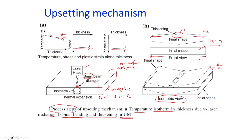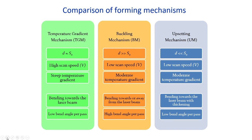Now let us compare the various forming mechanisms: TGM (temperature gradient mechanism), buckling mechanism, and upsetting mechanism. Looking at the relationship between laser spot diameter and workpiece thickness: in TGM the diameter of the laser spot and the workpiece thickness are almost equal. In the buckling mechanism, the diameter of the laser spot is very high in comparison with the thickness. In the upsetting mechanism, the diameter of the laser spot is comparatively very low relative to the thickness.